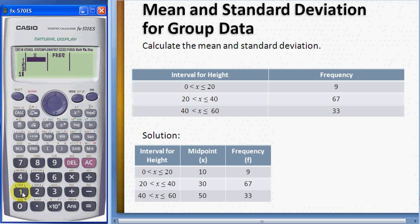Your X is 10 and then the frequency for 10 is 9. And you have 30 and 50, and the frequency is 67 and 33.